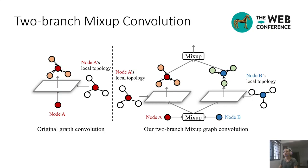To interpolate the paired nodes I and J, we need to mix their receptive field subgraphs. To achieve this, we propose the two-branch mixup graph convolution as shown in this figure. Here, we mix the node attributes of nodes I and J before the input layer. Next, we conduct the graph convolutions based on node I and J's topologies separately at each layer. After that, we mix the aggregated features from the two topologies together before the next layer.